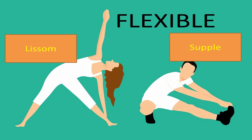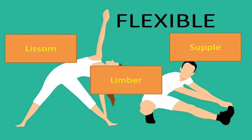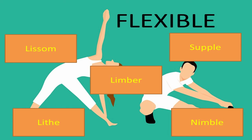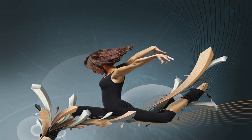Supple — s-u-p-p-l-e — supple also means flexible. Then we have limber, which also means flexible. Then we have lithe — l-i-t-h-e — and nimble. So we have five words: lissom, supple, limber, lithe, and nimble.